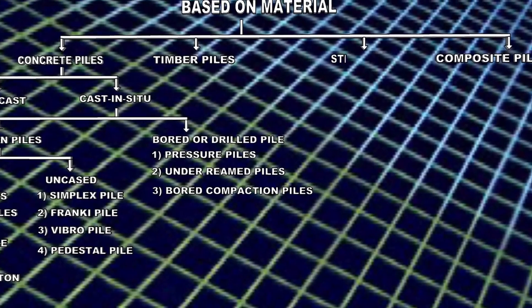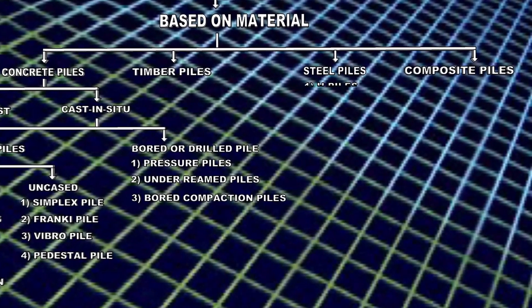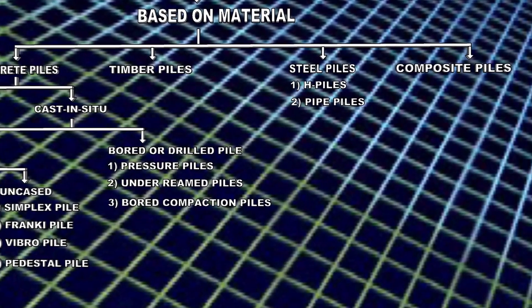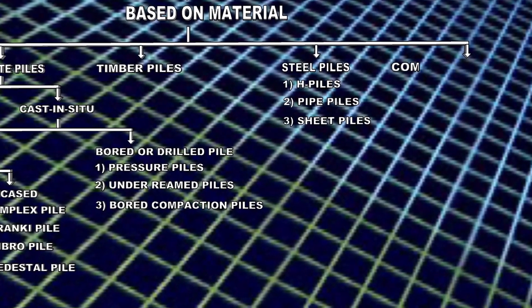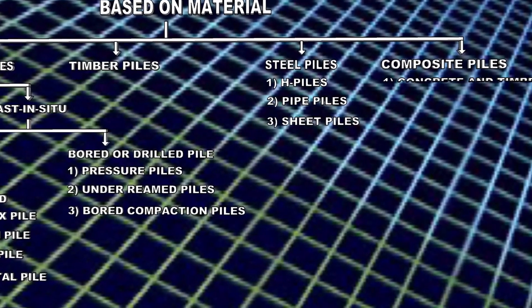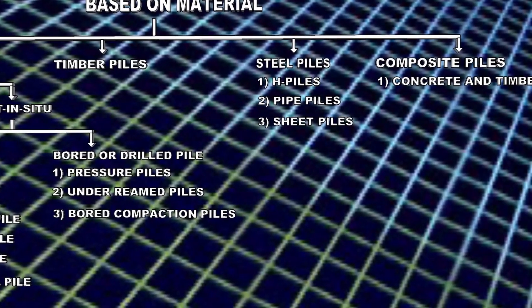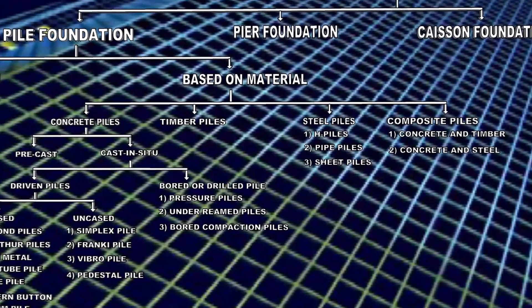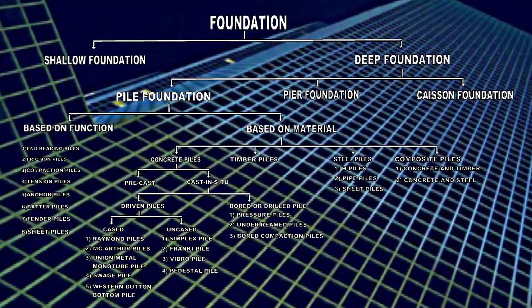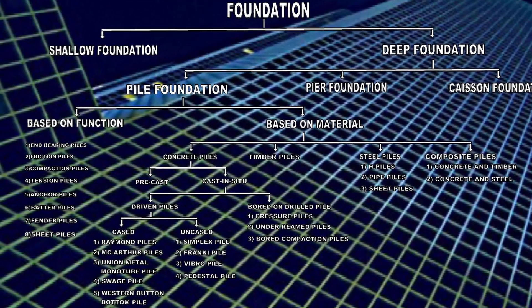The steel piles are divided into three types: H piles, pipe piles, and sheet piles. Composite piles comprise of two types: concrete and timber piles, and concrete and steel piles. In this video we are going to study the different types of piles based on function.